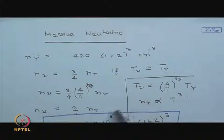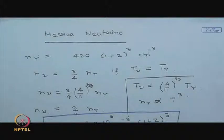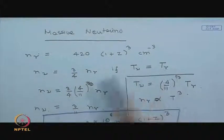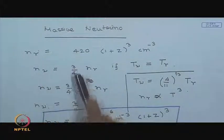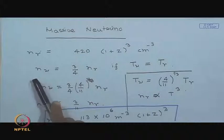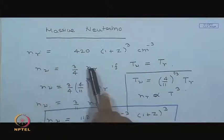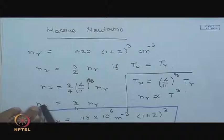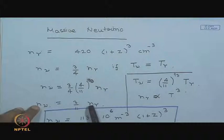The neutrino number density is lower than the photon number density. Since the neutrinos are fermions, if the temperature were the same, the number density of neutrinos would be 3/4 times the number density of photons for every species and every flavor. But the temperature is also lower, so finally the number density of neutrinos is 3/11 of the number density of photons.